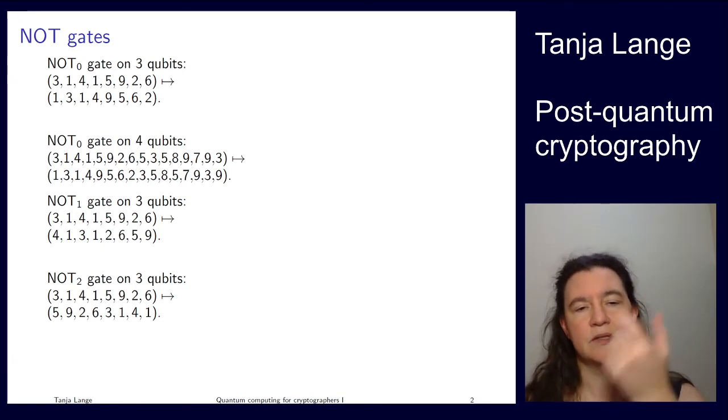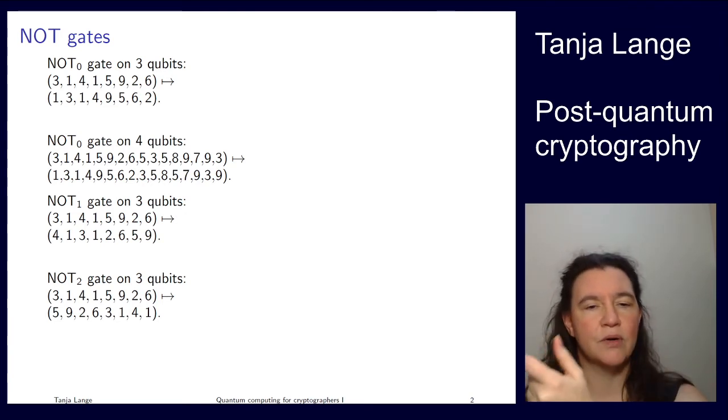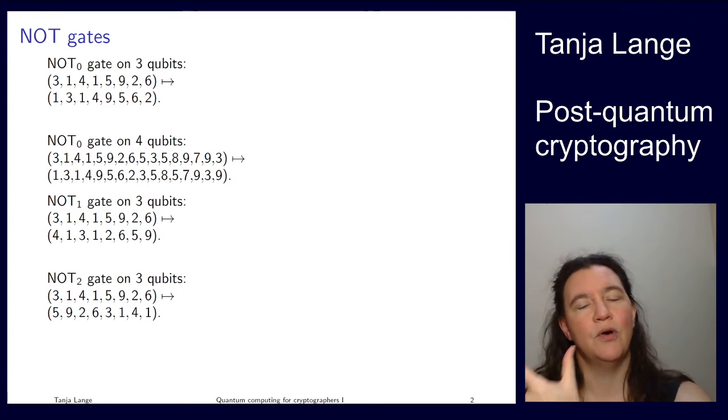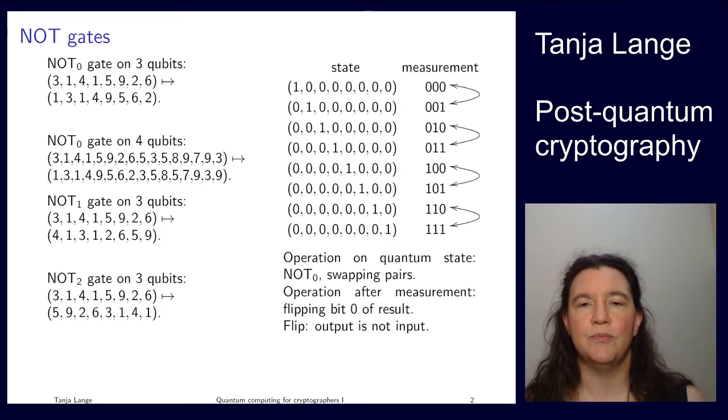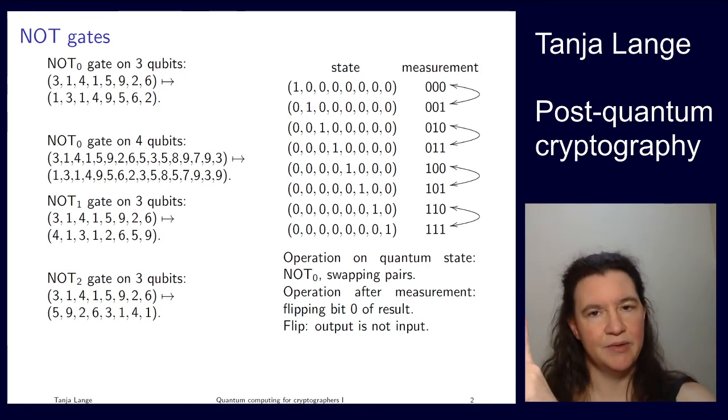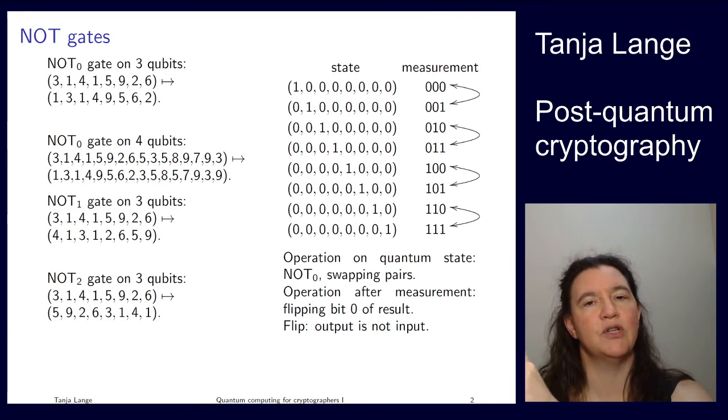If you apply this to the pure states, the ones guaranteed to give you a measurement, so 10000 will give you 0 as a measurement. The 0 position is the only thing that contains something, amplitude 1 everywhere else 0, so we are guaranteed to measure 0.